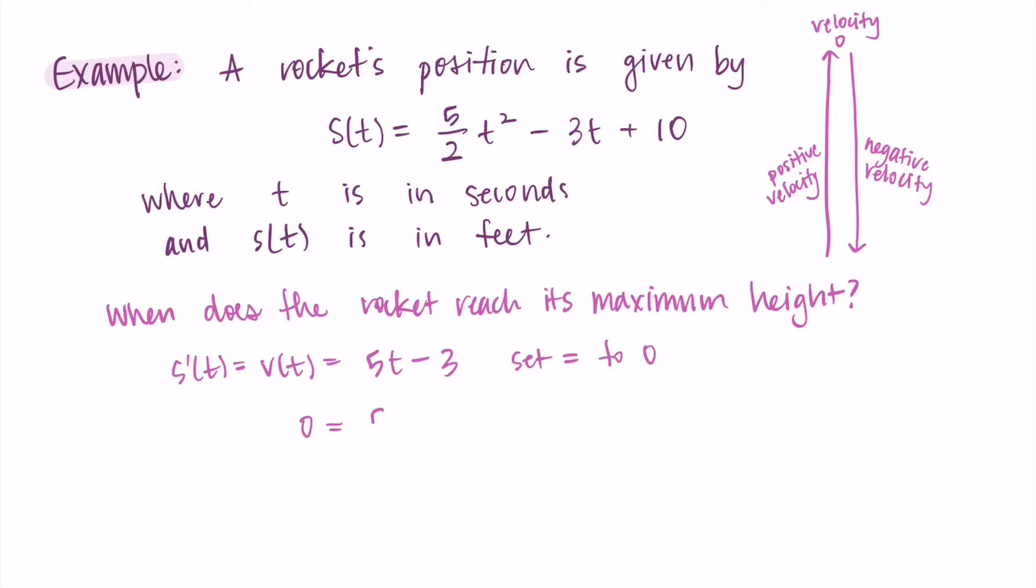So I move the 3 over to the other side and I divide by 5, and I'm getting t = 3/5. So at 3/5 of a second, the rocket is reaching its maximum height.